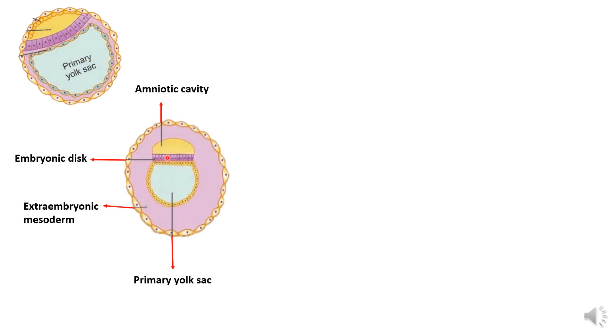Now we have the trophoblastic layer, the amniogenic cells, the amniotic cavity, the epiblast or ectoderm, and the hypoblast lining the primary yolk sac. The trophoblast will proliferate and produce a large number of cells, thereby separating this structure from the trophoblast. This mass of cells produced by the trophoblast is called the extraembryonic mesoderm — because it does not form part of the embryonic disc; it is outside the embryonic disc.